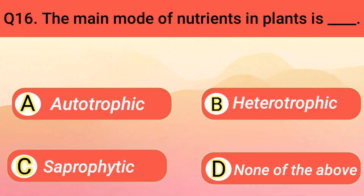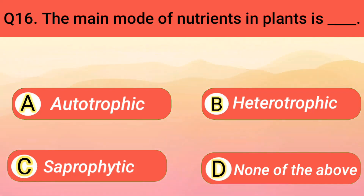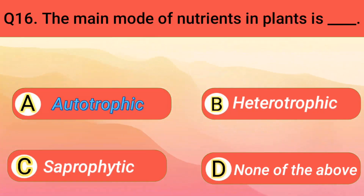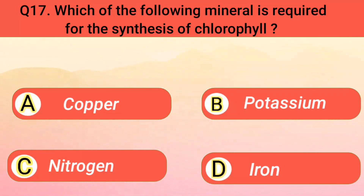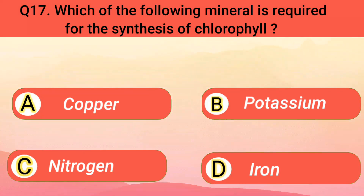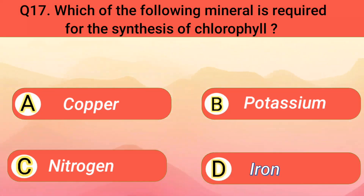The main mode of nutrition in plants is autotrophic. Which of the following minerals is required for the synthesis of chlorophyll? Iron.